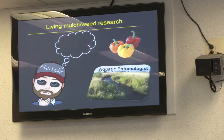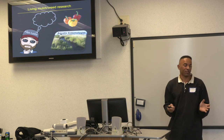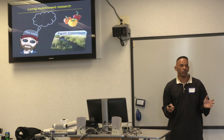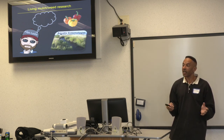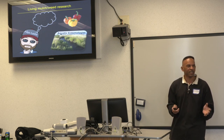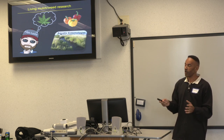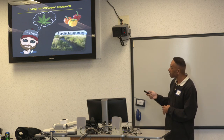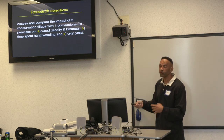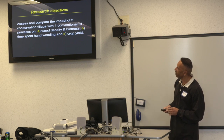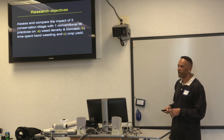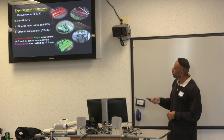So we set up a second study with Alan, an aquatic entomologist who agreed to work on weeds — though he was initially thinking of a different kind of weed. It was another multidisciplinary study focused on weed density, biomass, time spent hand weeding, and yield. We set up four treatments: conventional till, no-till, strip-till with roller crimper, and strip-till with living mulch. The first three treatments used a crimson clover and rye cover crop mix at eight and six-to-seven pounds per acre — a rate eligible for Maryland cover crop program cost-share. The fourth treatment used red clover as the living mulch.